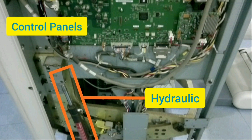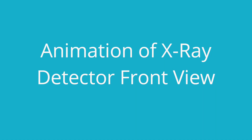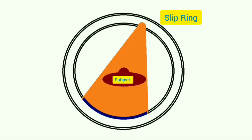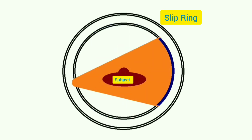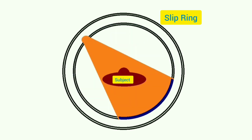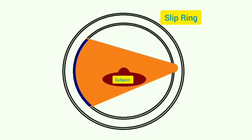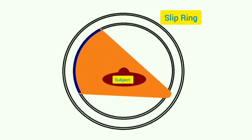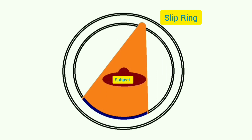Now let us understand this with the help of an animation. The outer circle is the housing, and the inner circle shows the X-ray tube and the detector path. The X-ray tube and detector continuously move, projecting a conical beam, and the subject is placed in the center. This was the principle of working of the 7th generation CT.